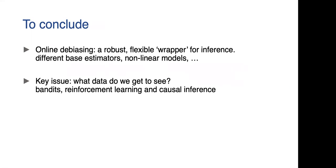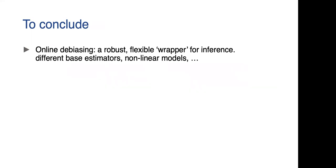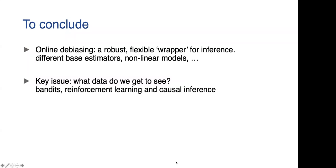To conclude, I'll just make a few points. I think we've been thinking about online debiasing as this robust and flexible wrapper for inference. I presented it in the context of least squares estimation, but we have a paper that does this with the lasso. Multiple things can be done. We're also working on nonlinear models. The key learning or the key insight or the key difficulty is to try and understand what data do we get to see.